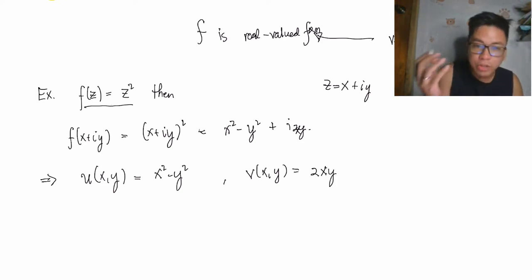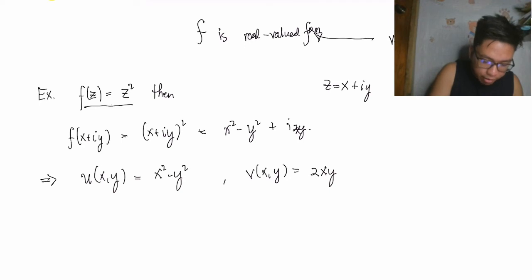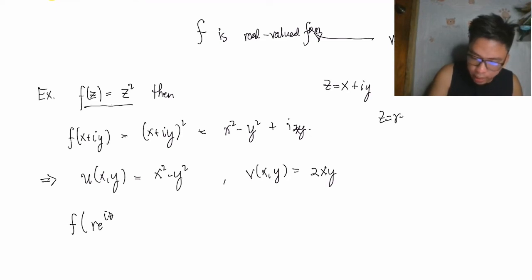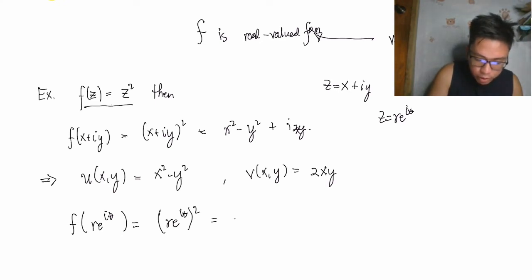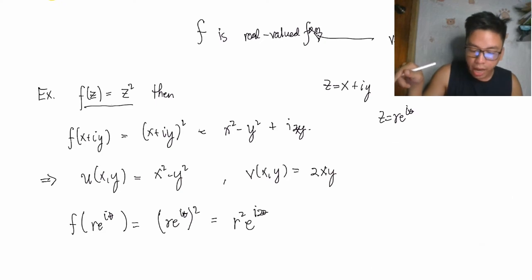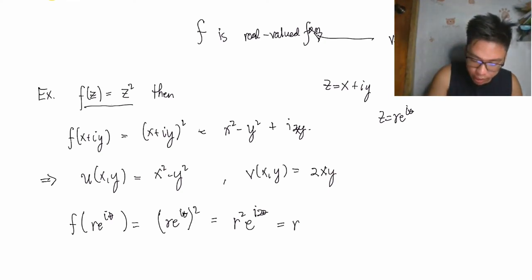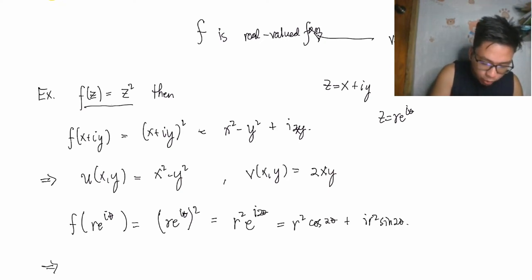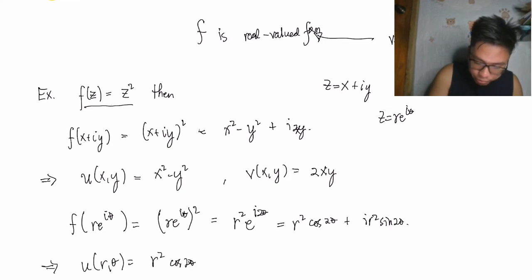For the polar coordinate form, f(re^{iθ}) = (re^{iθ})² = r²e^{i2θ}. Converting using Euler's formula gives r²cos(2θ) + ir²sin(2θ). Hence u(r, θ) = r²cos(2θ) and v(r, θ) = r²sin(2θ).